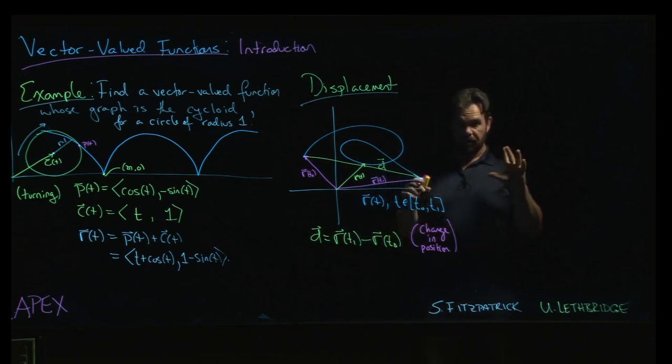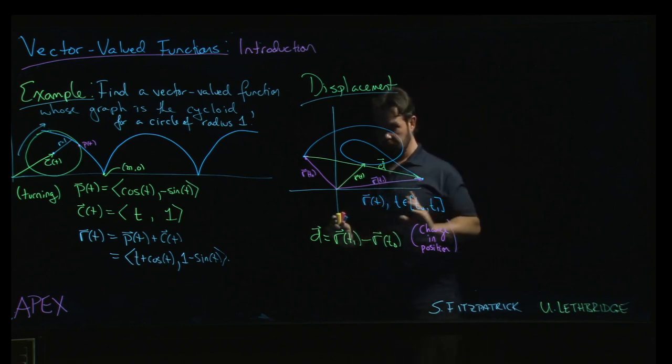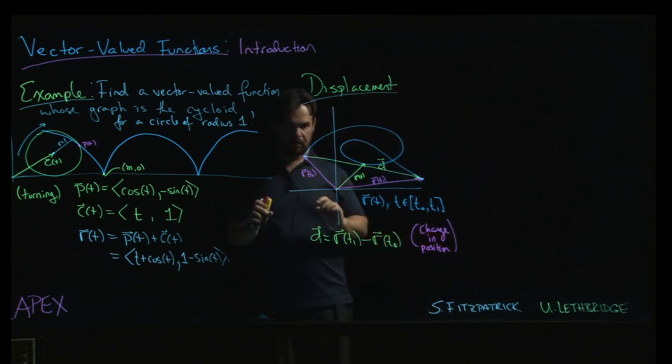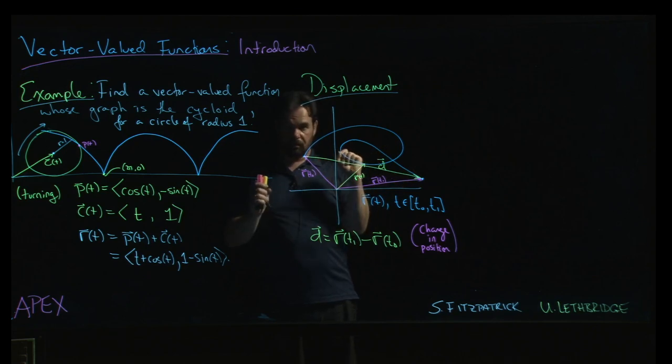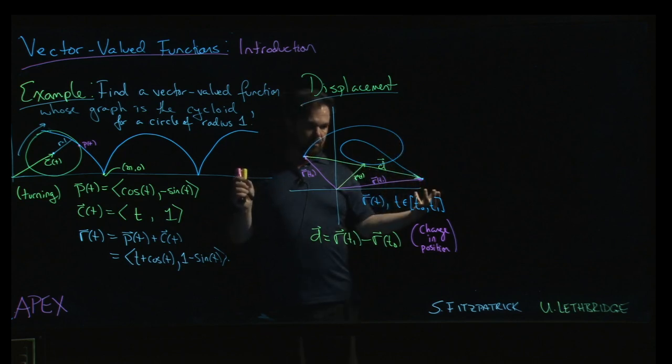Now, keep in mind, this is not the same thing as distance traveled. Distance traveled is a scalar quantity. This is a vector quantity. It gives you the magnitude and the direction. And the distance traveled depends on a lot more than the initial and final points. The distance traveled depends on the path that you took to get there. This being a somewhat more windy path, we're going to get a different result.